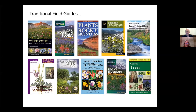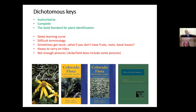The biggest alternative to modern apps are the dichotomous keys, which are sort of the gold standard for plant identification. They're authoritative and complete — they tend to have every species you can find in the state — but there's a pretty steep learning curve. They're not something many people are going to get really proficient at on their own.